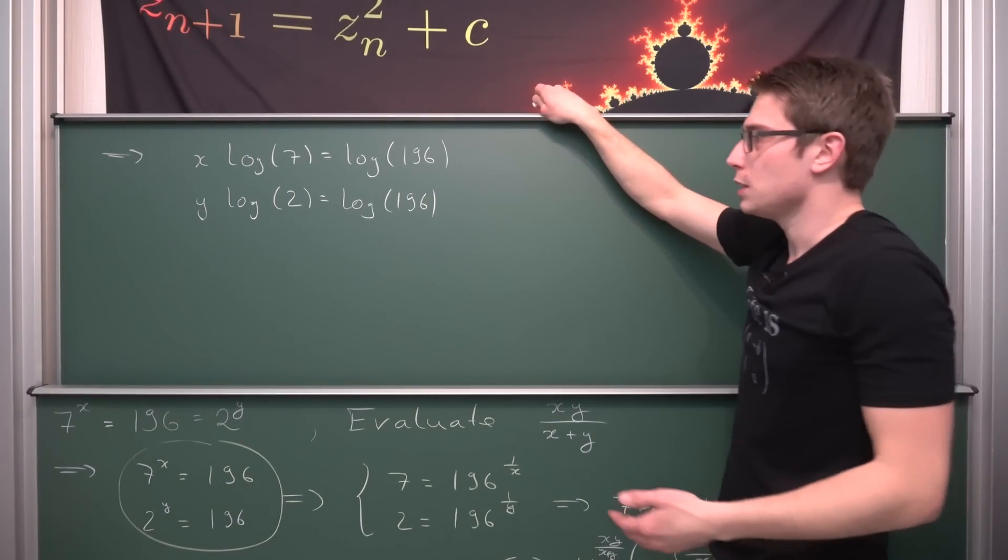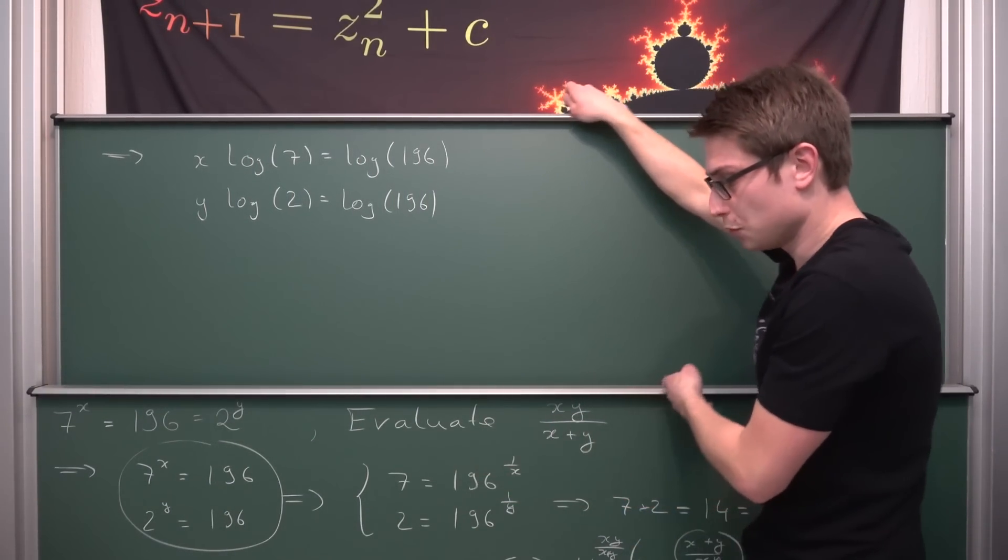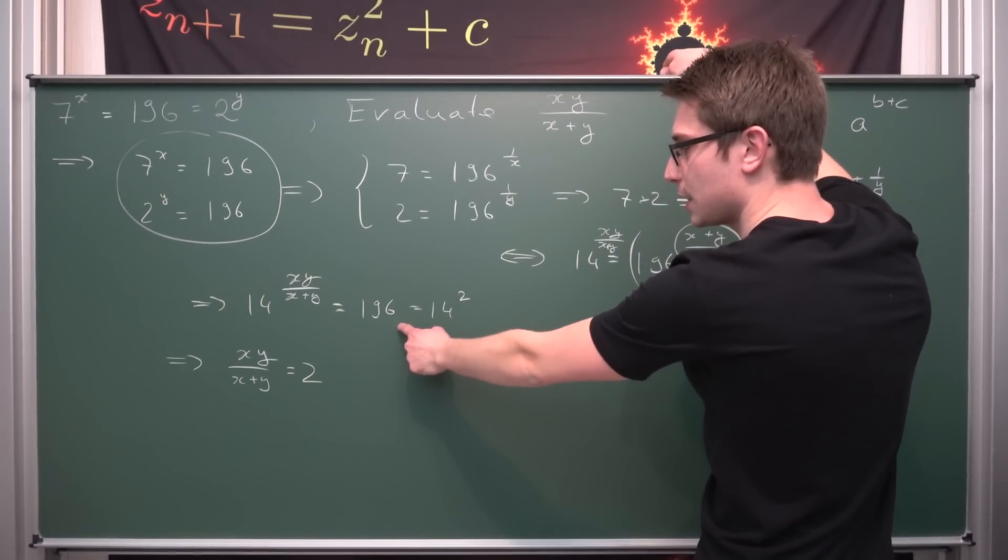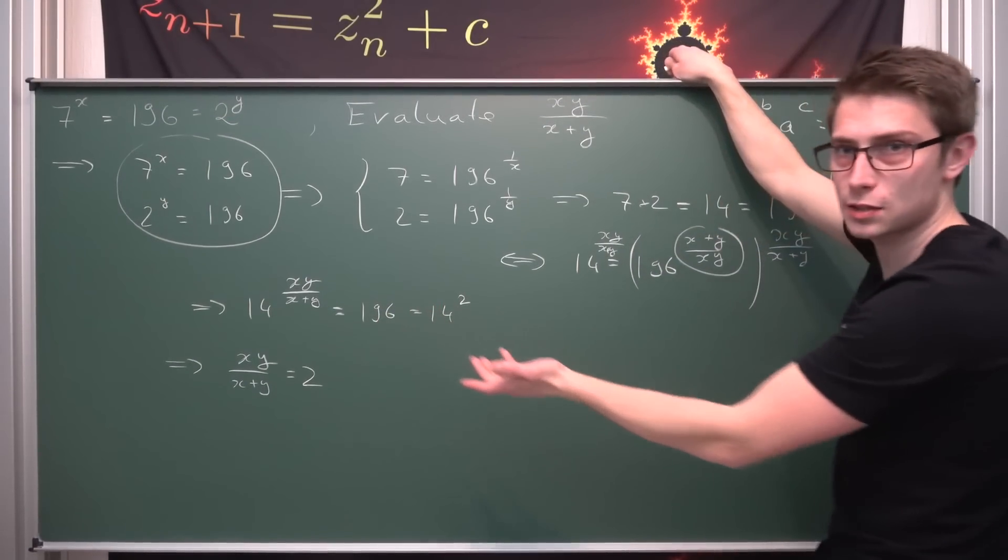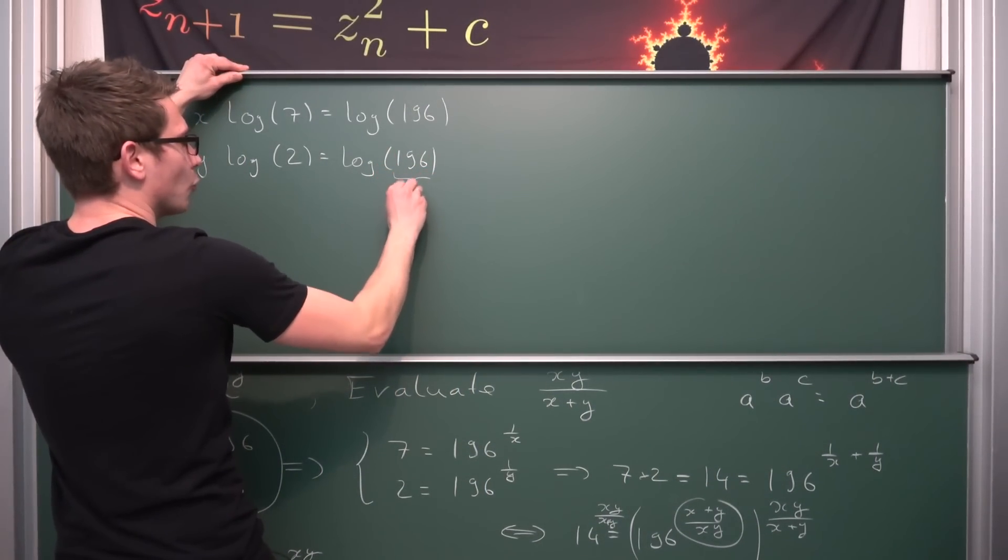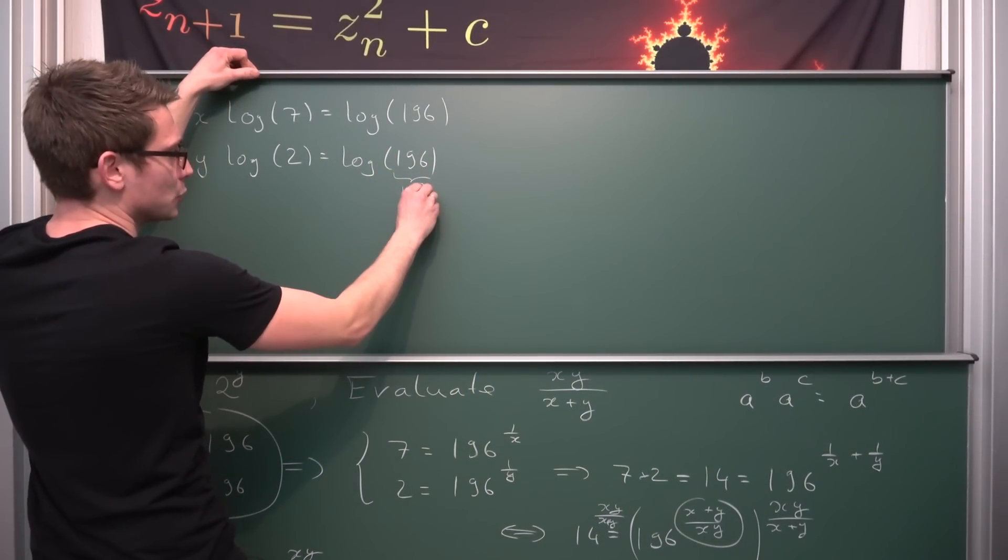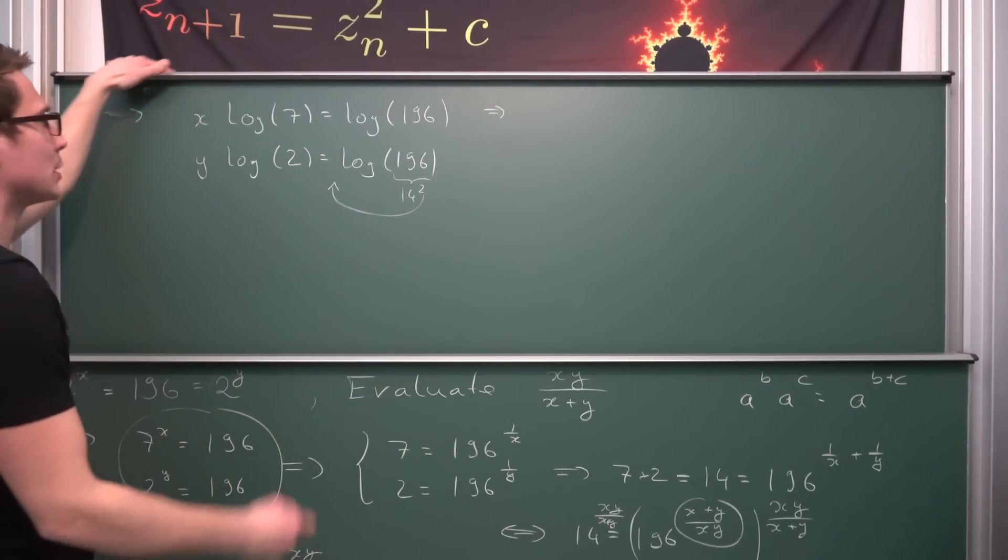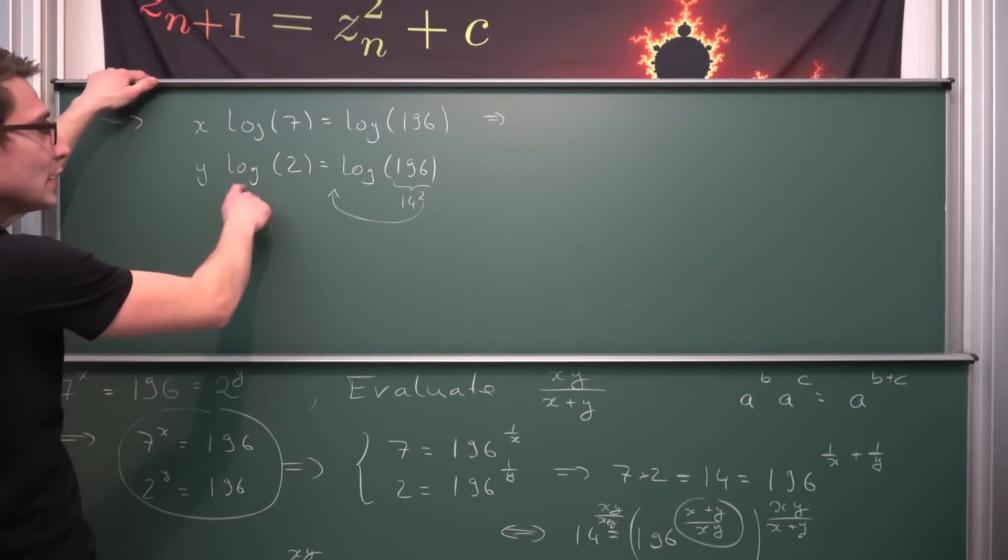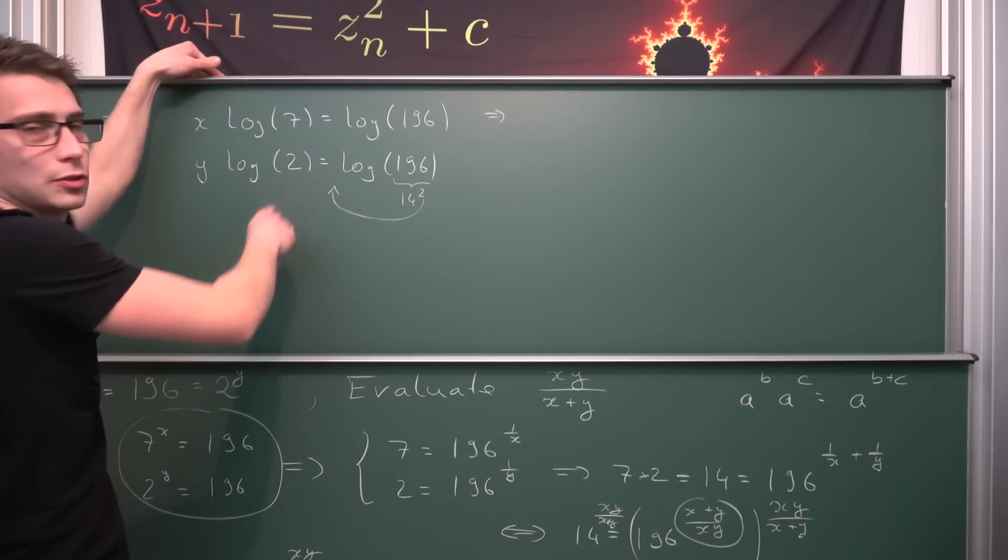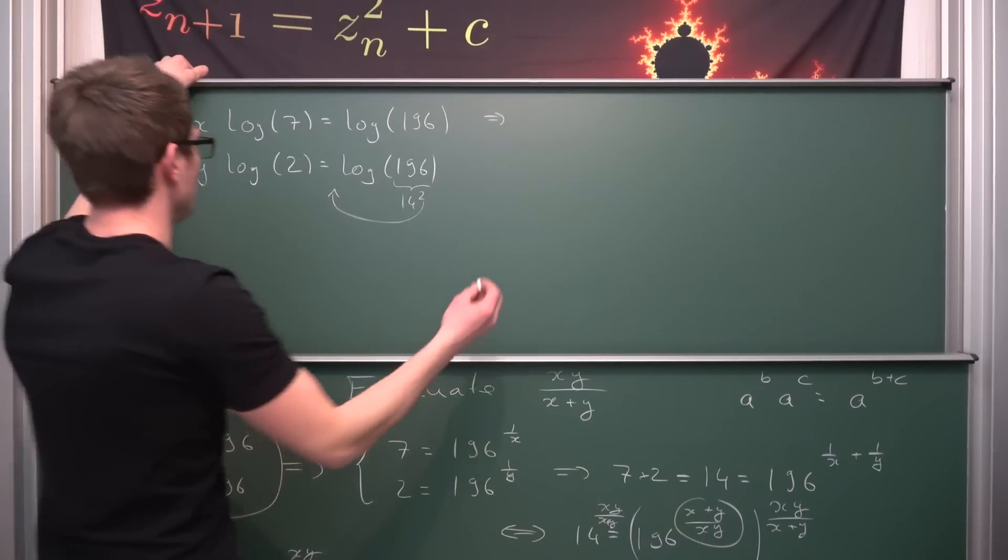And now what we can do is, at first what we can do is take a look at our square number once again and we are going to notice that 196 is 14 squared. Meaning if we get the log of 14 squared what we can do is drag the exponent to the front, the 2 here in both cases, giving us two new equations and dividing both sides by log of 7 and log of 2 respectively. They are not equal to 0 since 7 and 2 are not equal to 1 obviously.